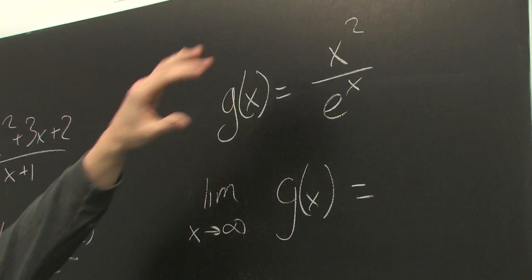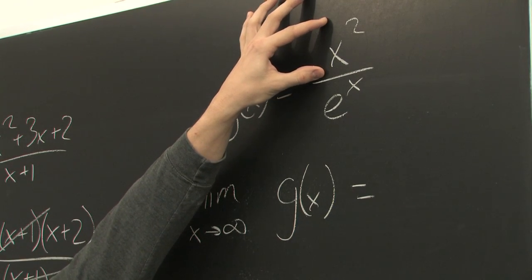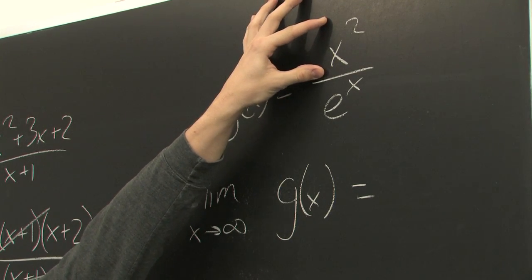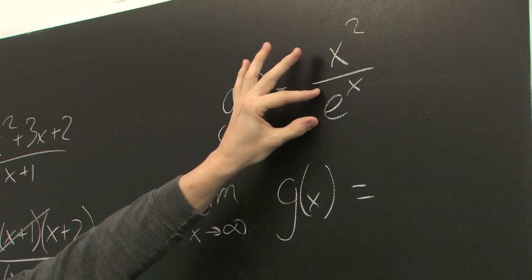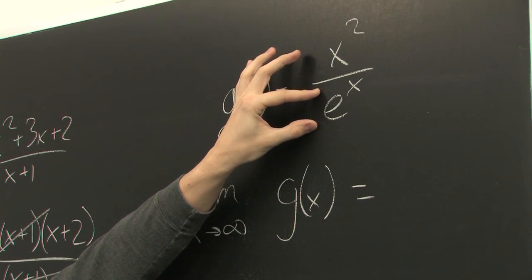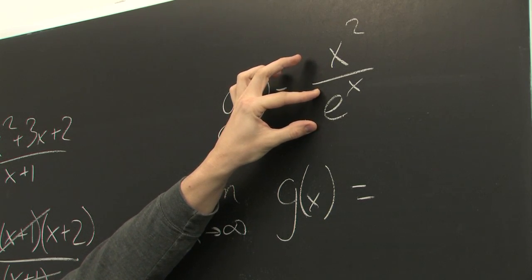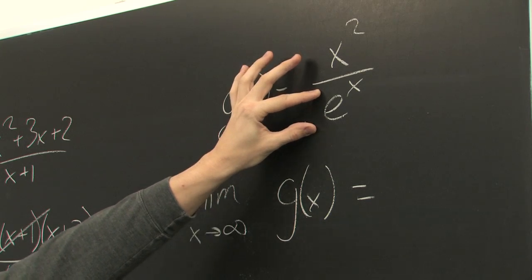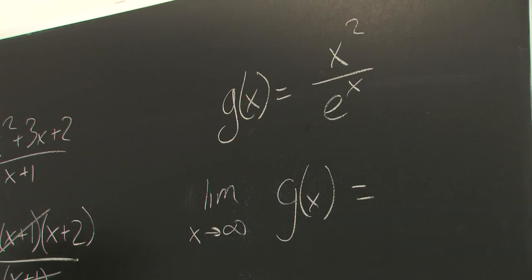Which states that if the numerator of a function goes towards positive or negative infinity, and the denominator of a function also goes towards positive or negative infinity as you are looking at the limit, what you can do is take the derivative of the top and the derivative of the bottom, and you will get the same limit.